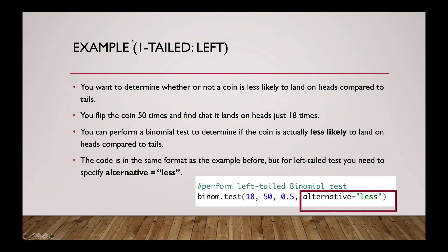You can perform a binomial test to determine if the coin is actually less likely to land on heads compared to tails. To do this, you can use the code below, which is in the same format as the previous example. But for a left-tailed test, you need to specify that alternative equals less.